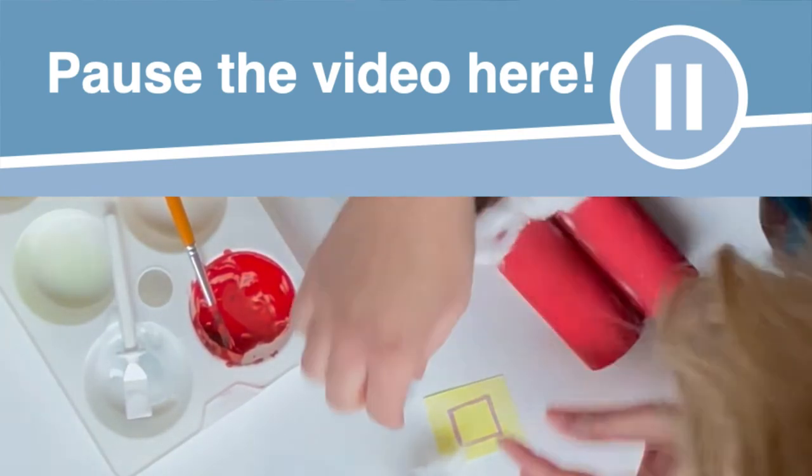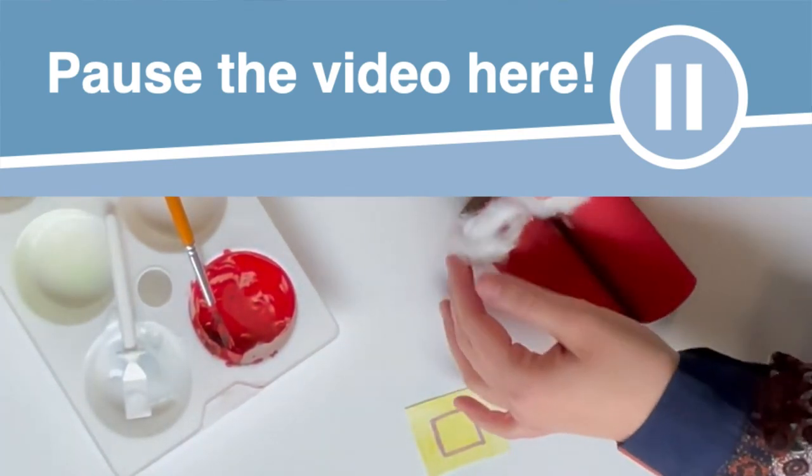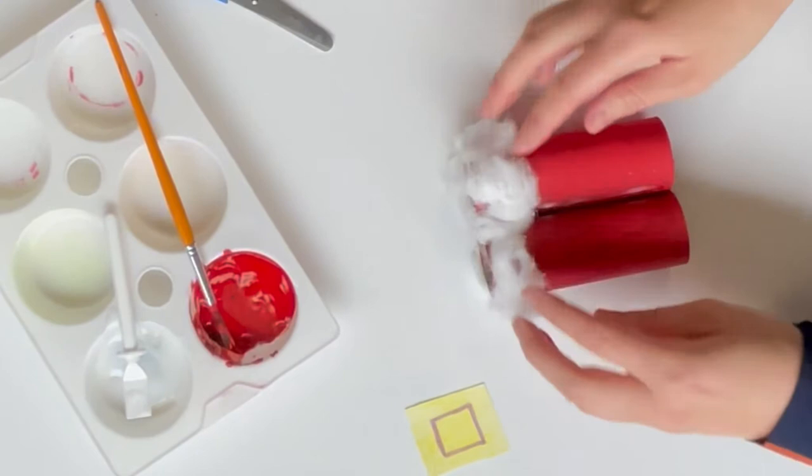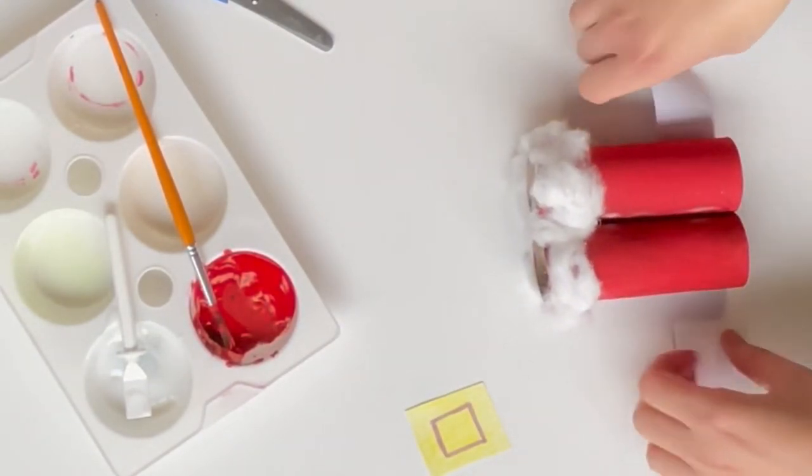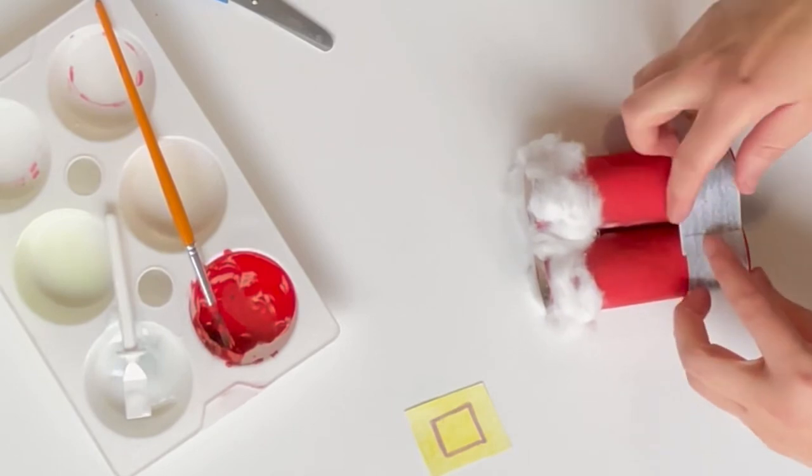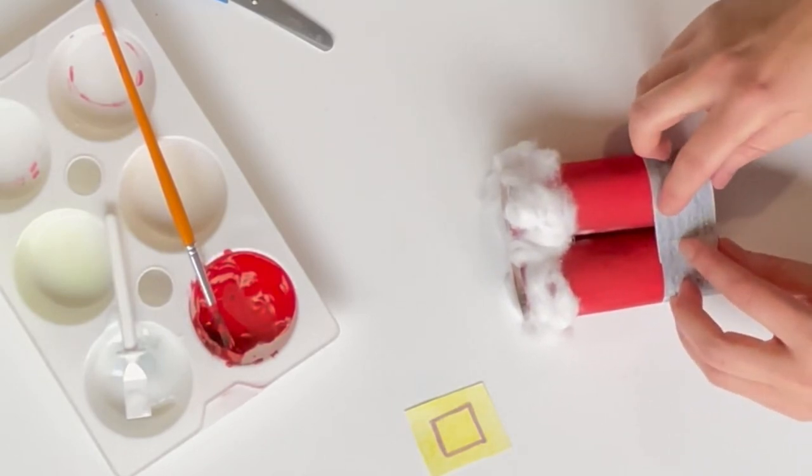Pause the video here until you are ready for the next step. Take your black rectangle and wrap it around the other end before securing in place with glue.